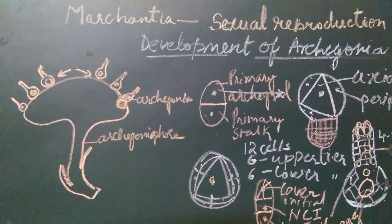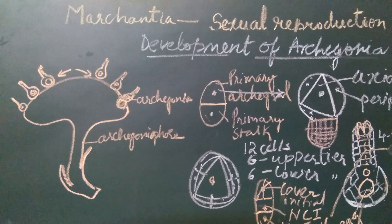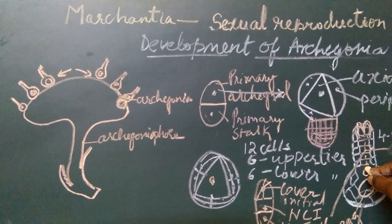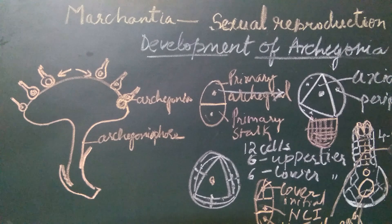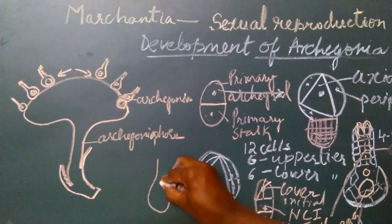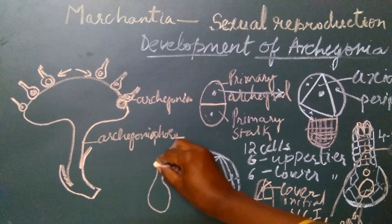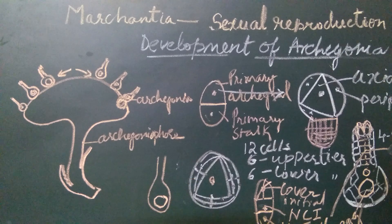At maturity the archegonia is now ready for fertilization. At maturity the venter canal cell and all the neck canal cells disintegrate and they form a mucilaginous substance. At maturity only the egg cell remains within the archegonia, which is now ready for fertilization.